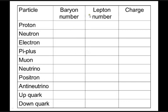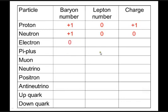Before we can apply all this, we need to know the particle numbers. A proton is a baryon, not a lepton, charge plus one. A neutron is a baryon, not a lepton, charge zero — don't confuse baryon number with charge. The electron is not a baryon, it is a lepton, charge minus one. The pi plus is a meson (a hadron but not a baryon), lepton number zero, charge plus one.